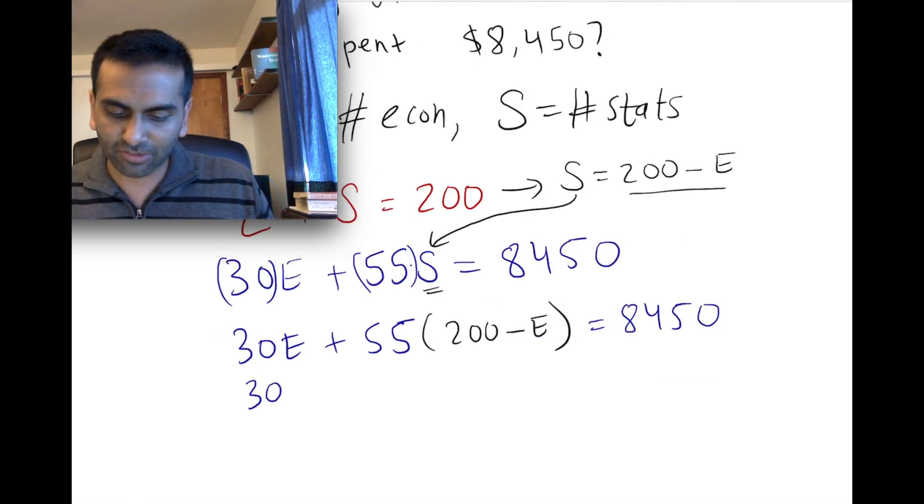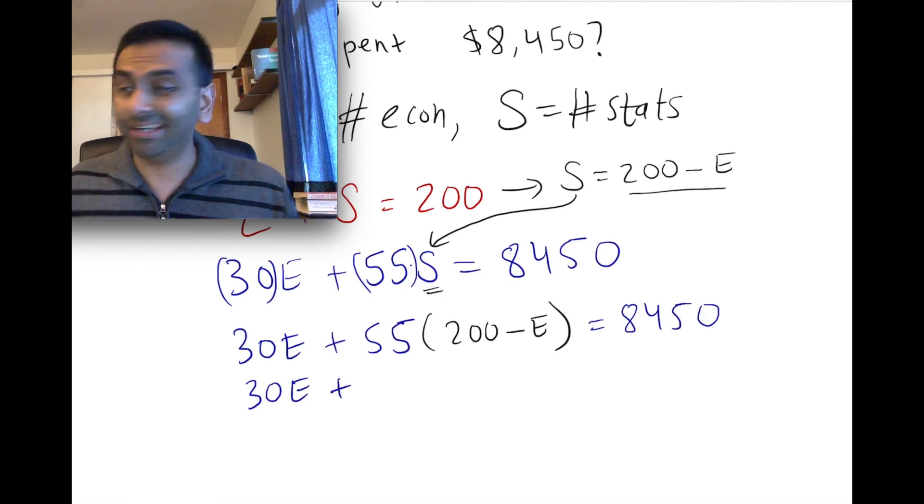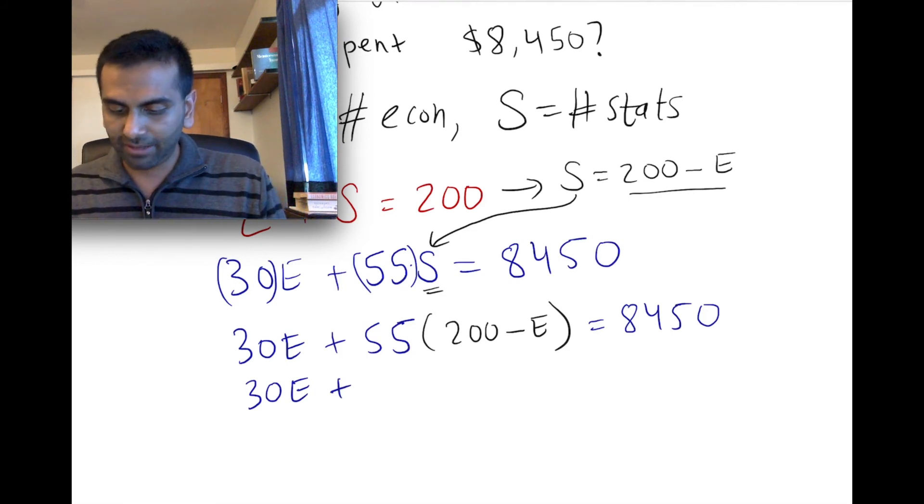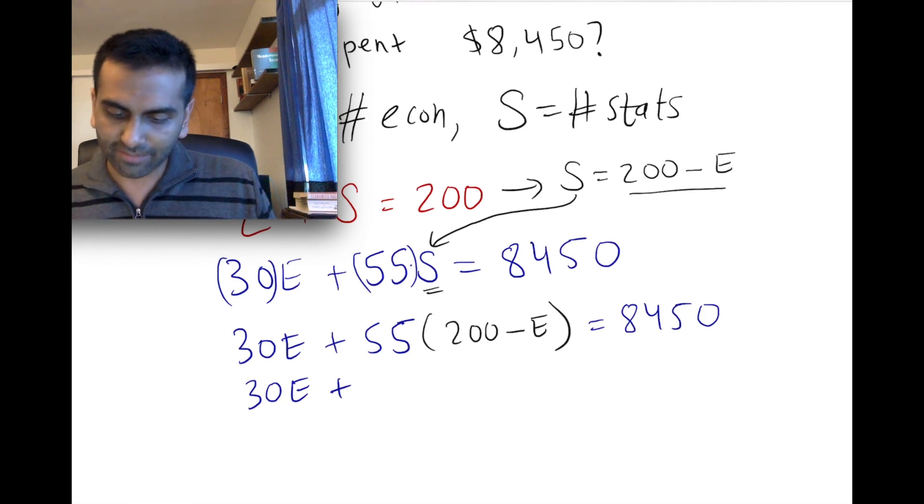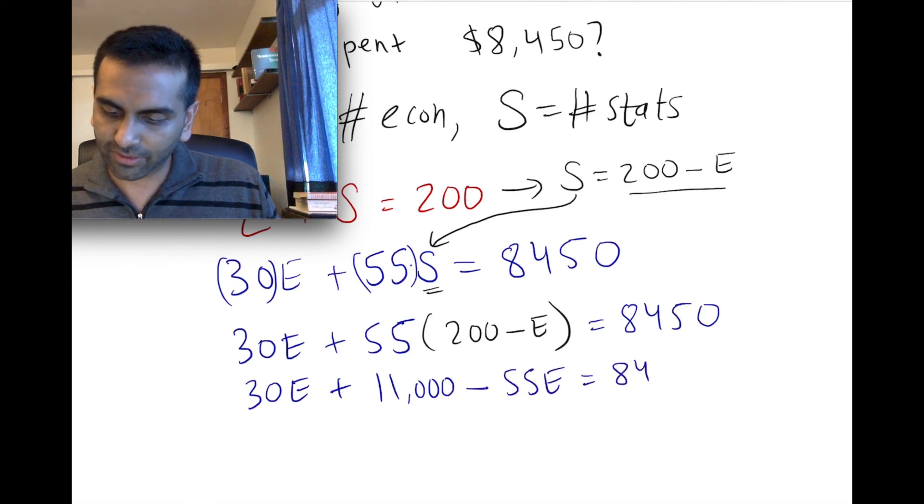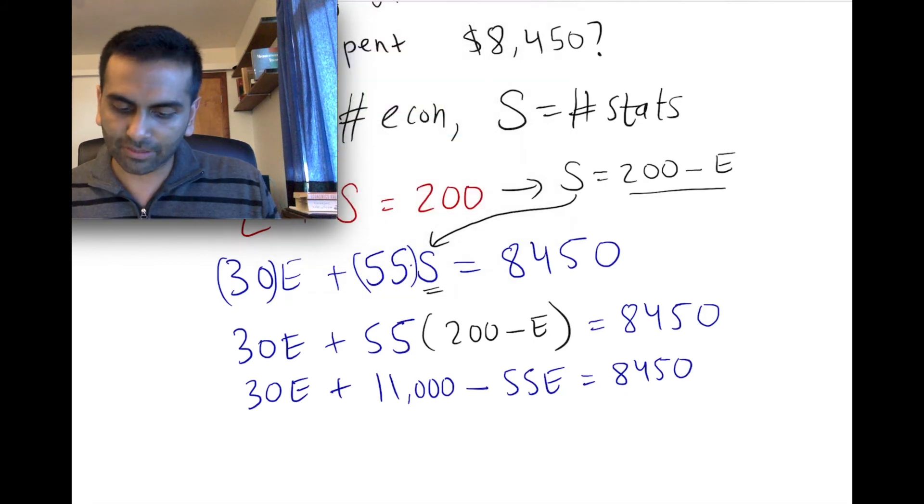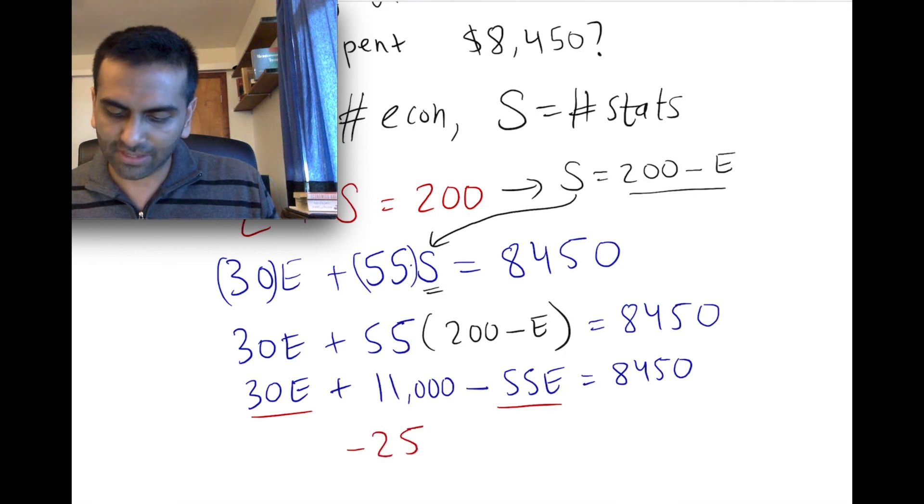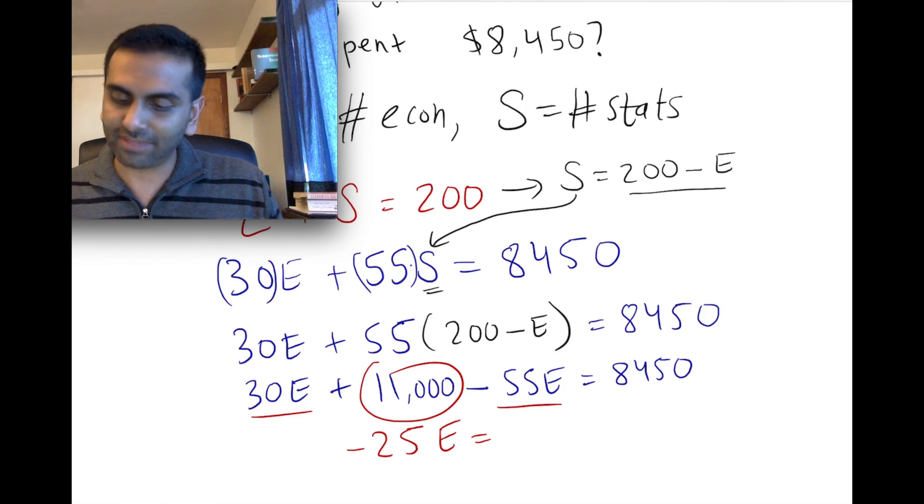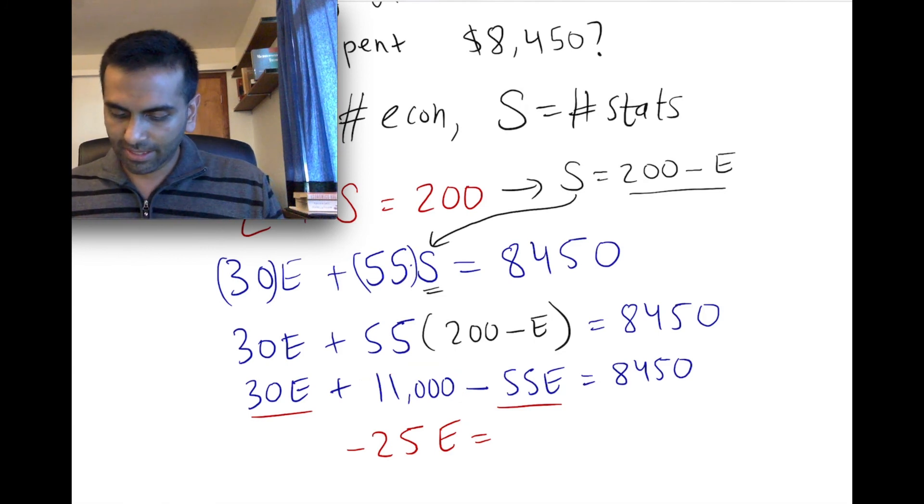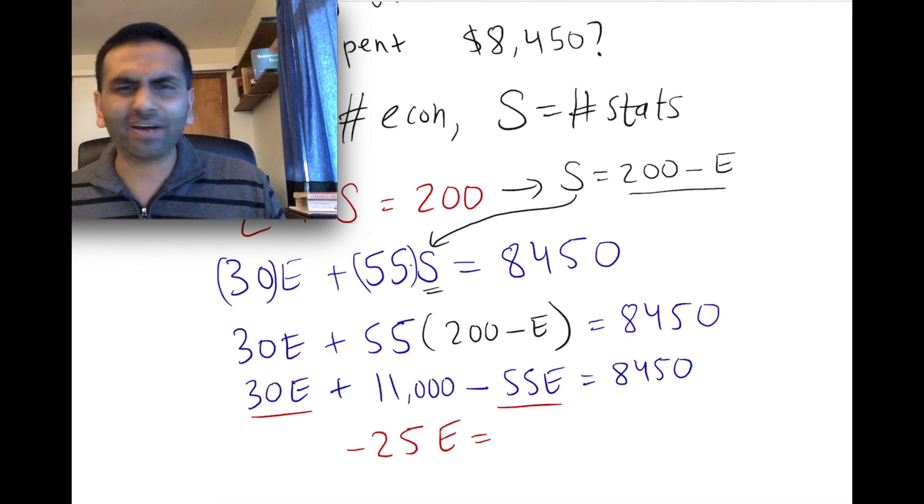And now from here, it's just pure algebra, distributive property. 55 times 200, I'm just going to use my calculator, and I get 55 times 200 is 11,000. So that's 11,000 minus 55 times E is negative 55E equals 8,450. If you were to combine like terms, 30 minus 55 is negative 25. So it's negative 25E equals, and you can subtract 11,000 from both sides. So that's going to be 8,450 minus 11,000 gives you negative 2550.